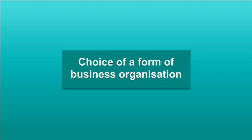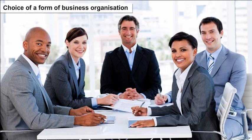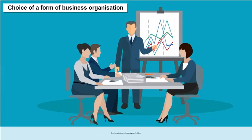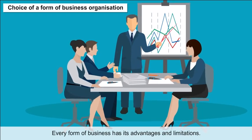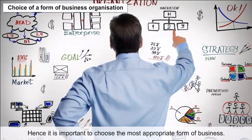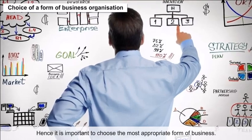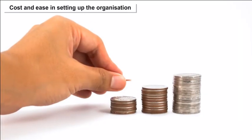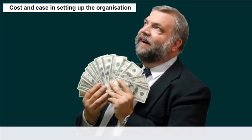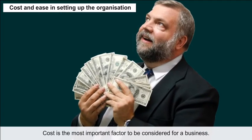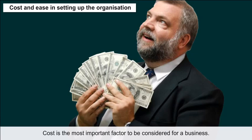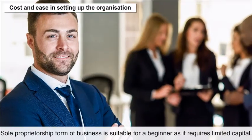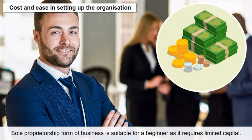Choice of a form of business organization: Every form of business has its advantages and limitations; hence it is important to choose the most appropriate form of business. Important factors to consider include cost and ease in setting up the organization. Cost is the most important factor — sole proprietorship form of business is suitable for a beginner as it requires limited capital.